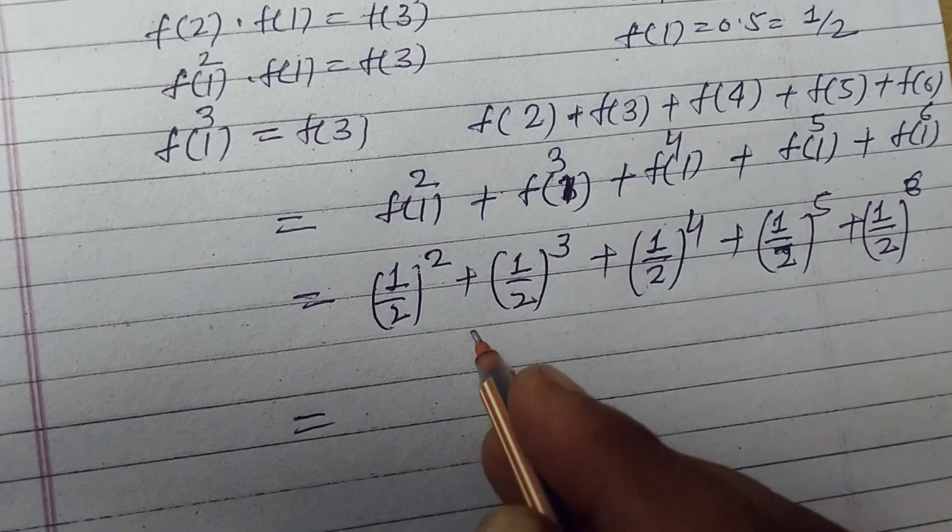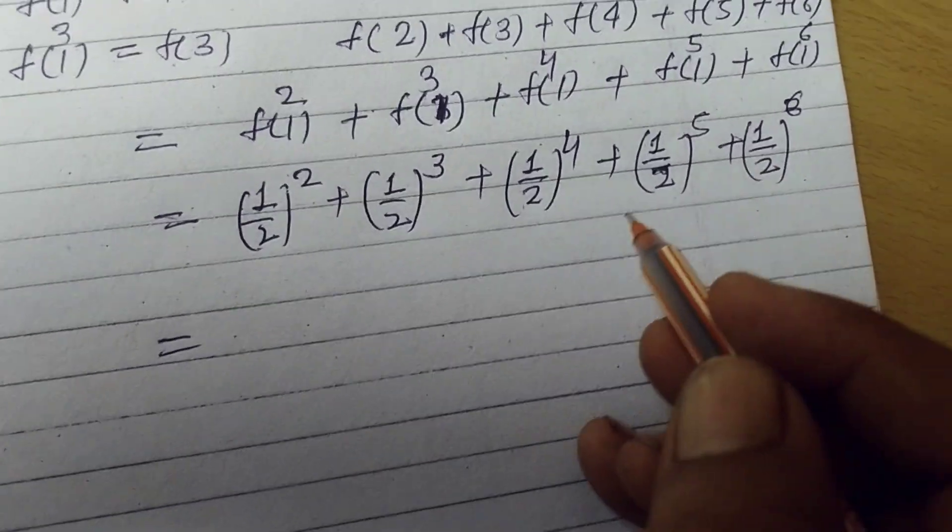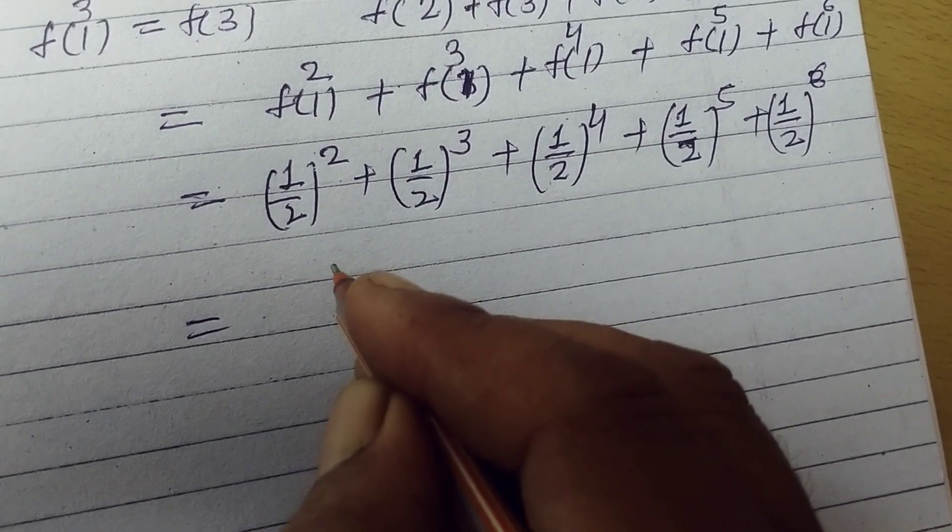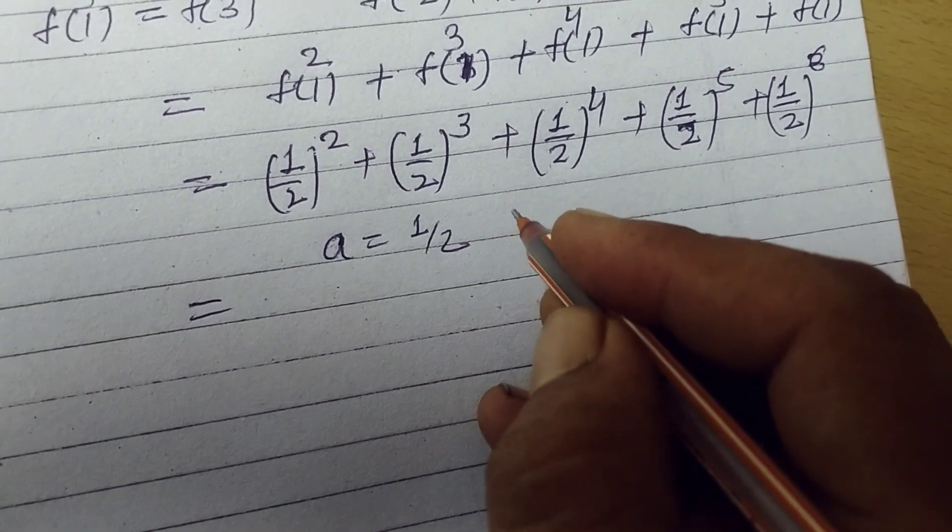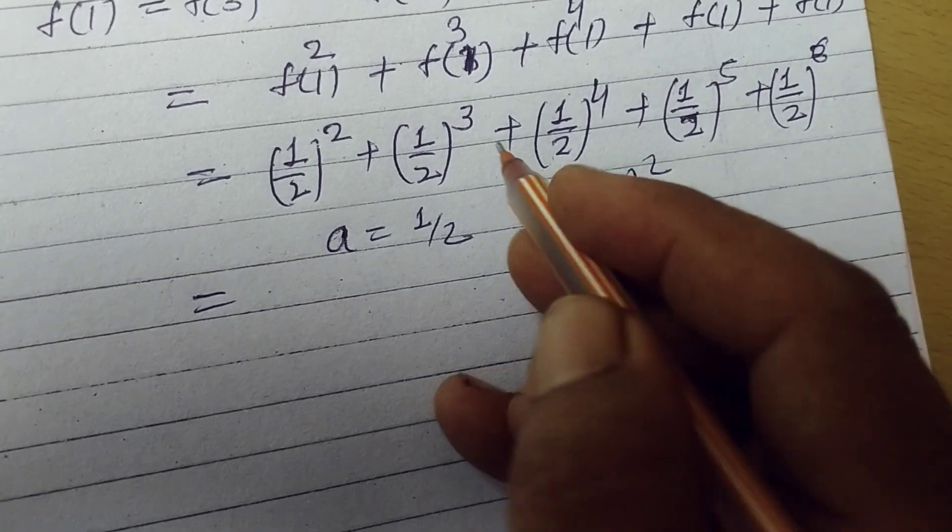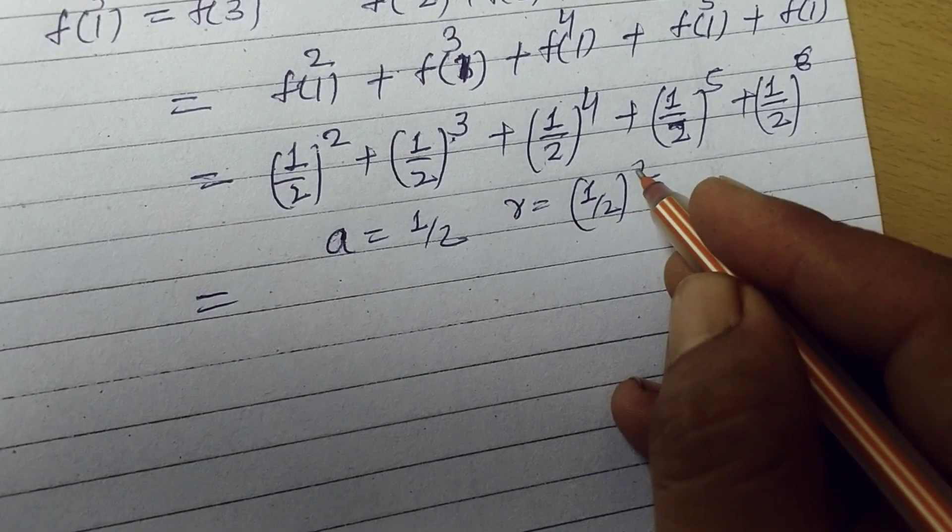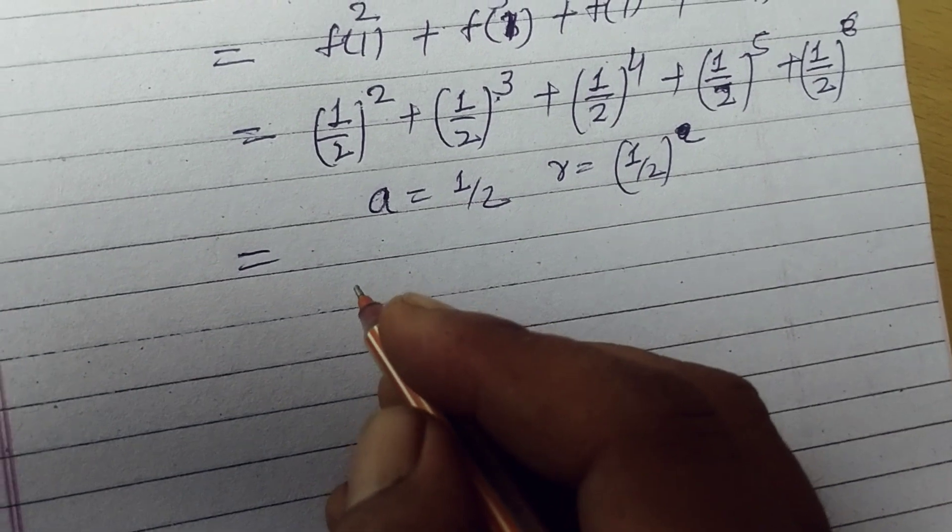These are five terms of geometric progression in which a is 1 by 2 and r is 1 by 2 whole square. r is 1 by 2.